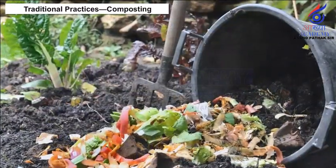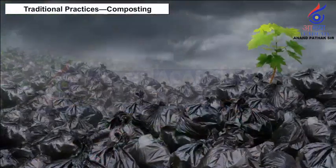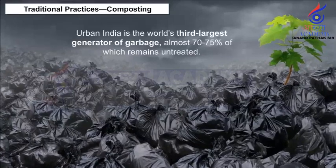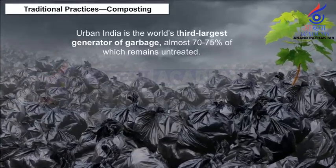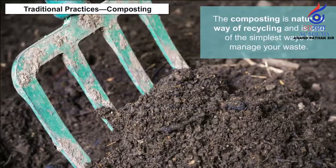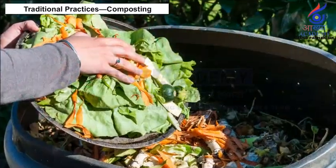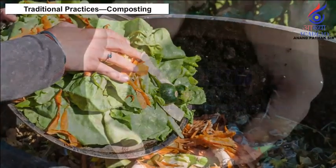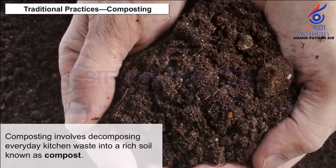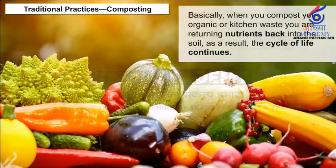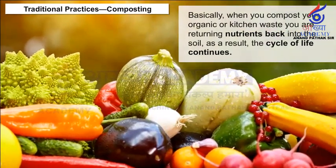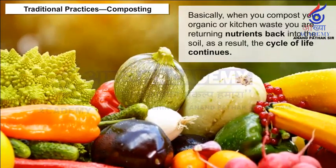Traditional Practices: Composting. Urban India is the world's third largest generator of garbage, almost 70–75% of which remains untreated. Composting is nature's way of recycling and is one of the simplest ways to manage waste — and it can be done at home. Composting involves decomposing everyday kitchen waste into a rich soil amendment known as compost. When you compost your organic or kitchen waste, you are returning nutrients back into the soil, and as a result the cycle of life continues.